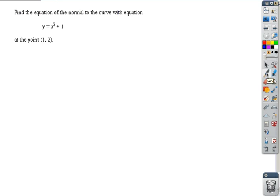We need two pieces of key information: a point to work with, which in this question is given as (1, 2), and we're going to need a gradient or slope.